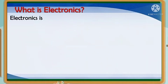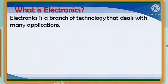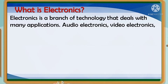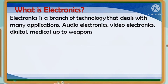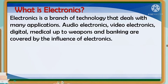What is electronics? Electronics is a branch of technology that deals with many applications — audio electronics, video electronics, digital, medical, up to weapons, and banking are covered by the influence of electronics.